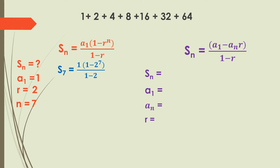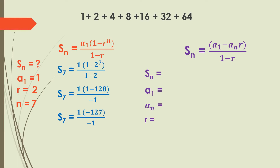Our equation becomes S sub 7 equals 1 times (1 minus 2 raised to 7) all over (1 minus 2). Simplifying: S sub 7 equals 1 times (1 minus 128) over negative 1. That gives S sub 7 equals 1 times negative 127 over negative 1. Multiplying 1 times negative 127 gives negative 127 over negative 1, which simplifies to 127. So the sum of the terms is 127.